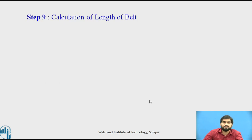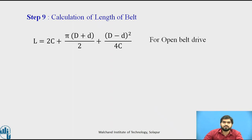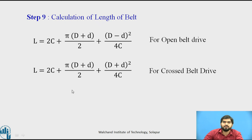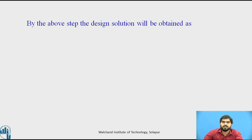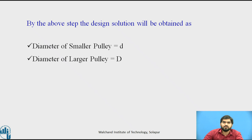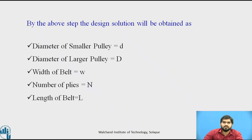Step number 9: calculation of the length of the belt. For the open belt drive, we use the standard open belt equation; for the cross belt drive, a different equation is used. Calculate the total length of the belt. By the above steps, the design solution will be obtained: diameter of smaller pulley, diameter of larger pulley, width of the belt, number of plies, and length of the belt.